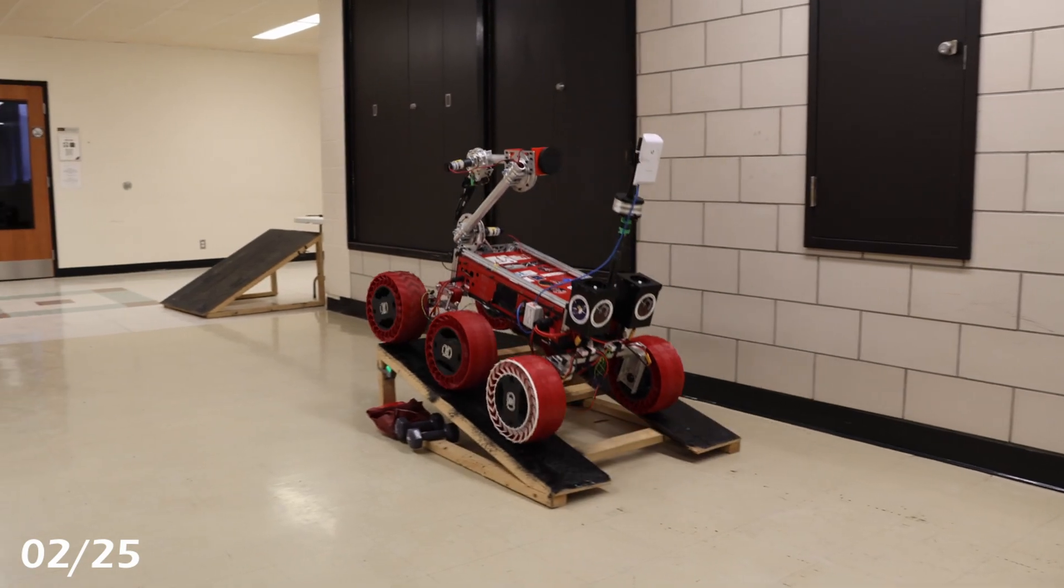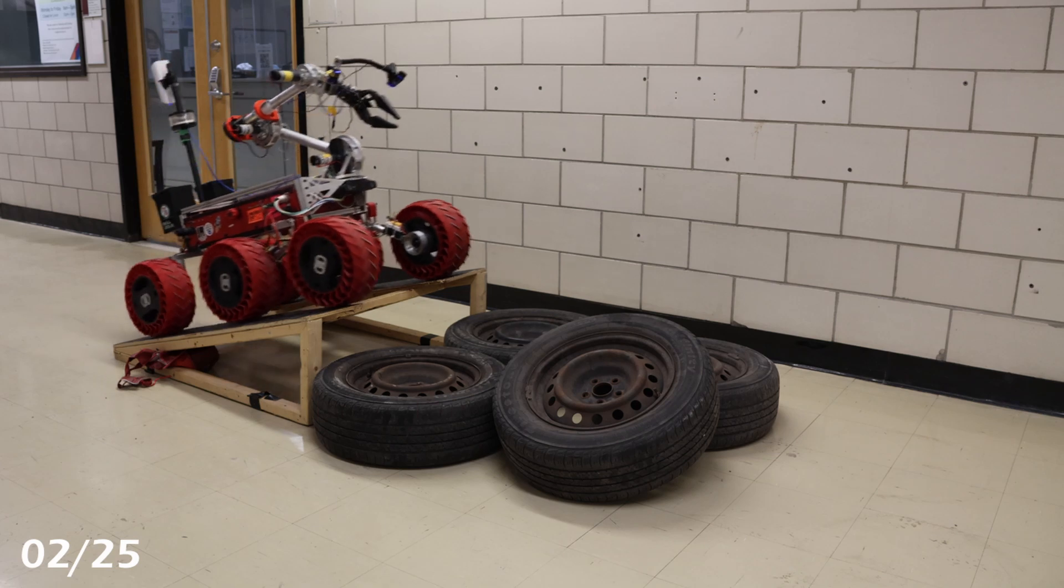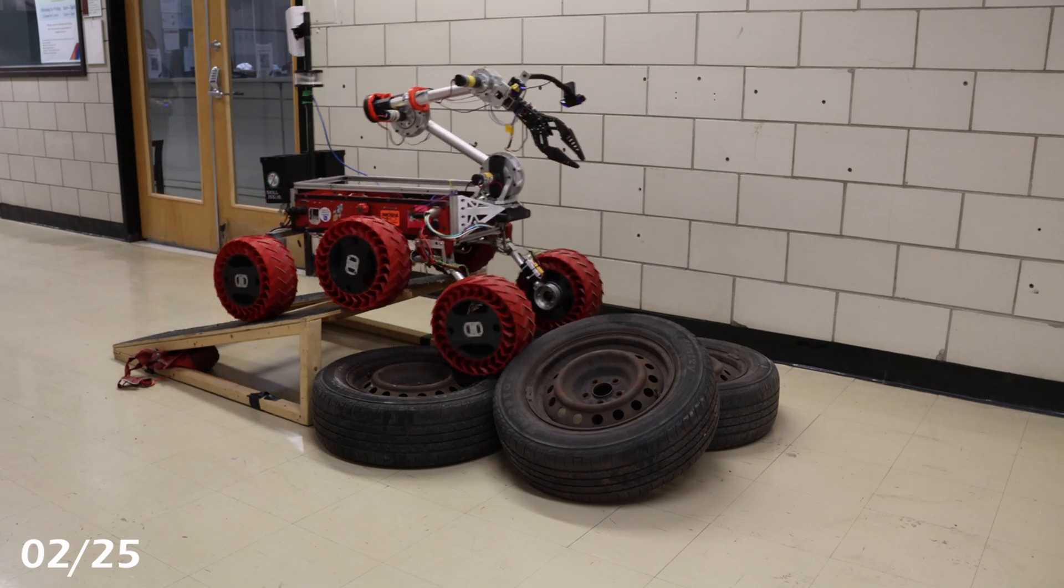The rover's chassis features a triple bogey suspension system. The two front bogeys are mounted on a four-bar linkage, allowing them to navigate steep and harsh terrain more effectively.